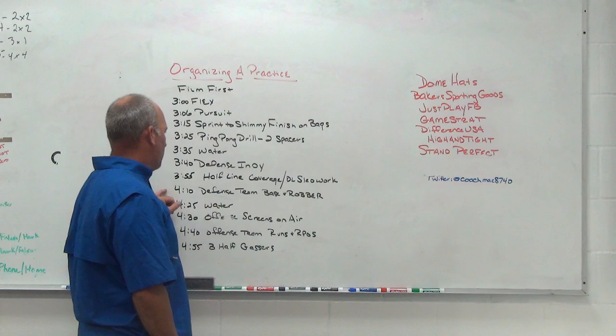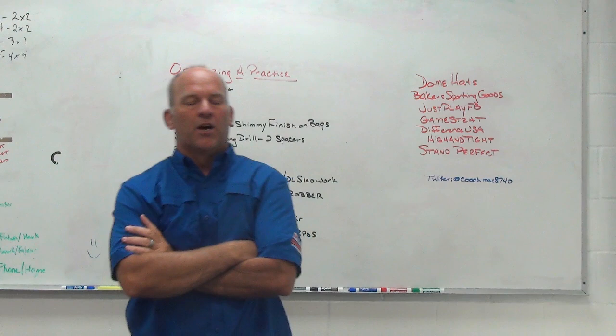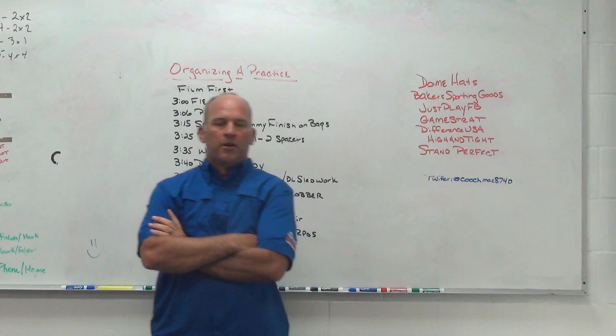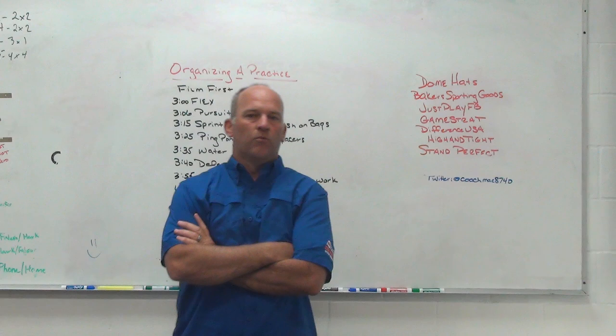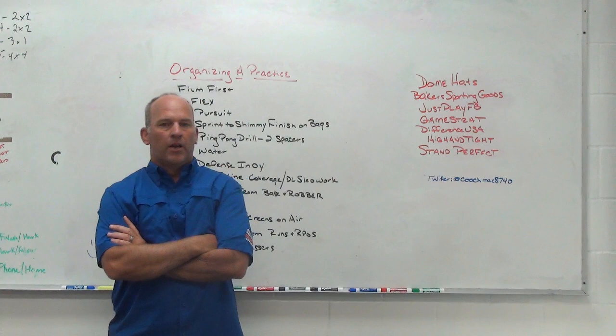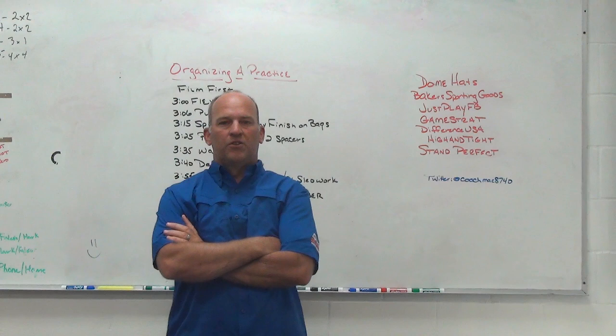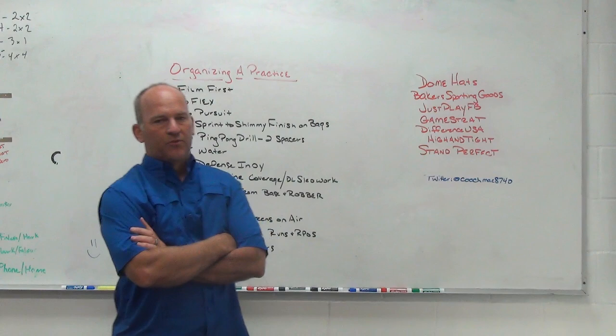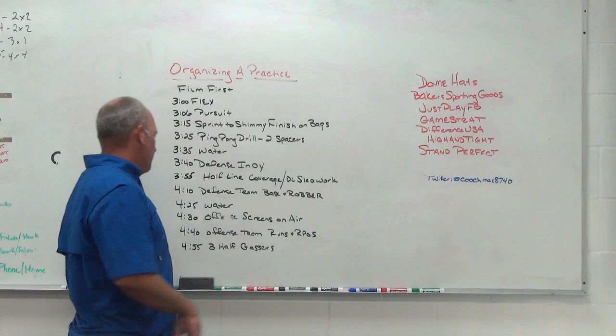Then from half-line, we'll go to a defensive team period working against a scout group. Today's defensive team period focuses only on base coverages and what we call robber, which is one low, one high, one wreck. That's a man-to-man defense with safeties extra playing low hole, high hole. So today in the script, there is only base defense with D-line games and our base coverages and then our robber coverage. There are no blitzes in today. Tomorrow will be a day where we go back and look at some blitzes. But today is defensive team, base versus scout, base coverages, robber coverage, some D-line stunts mixed in. Another water break.